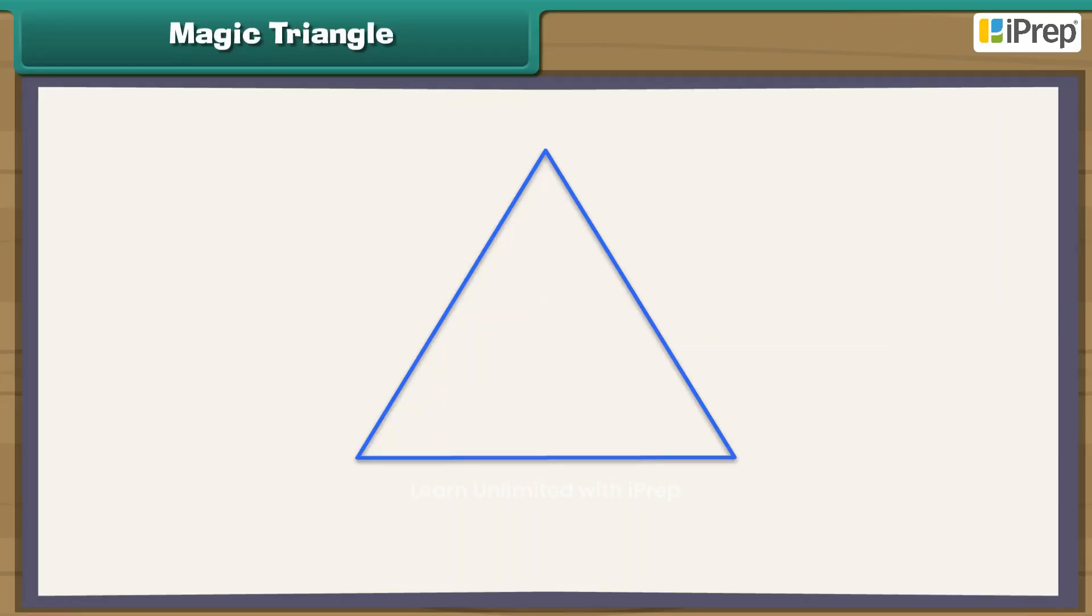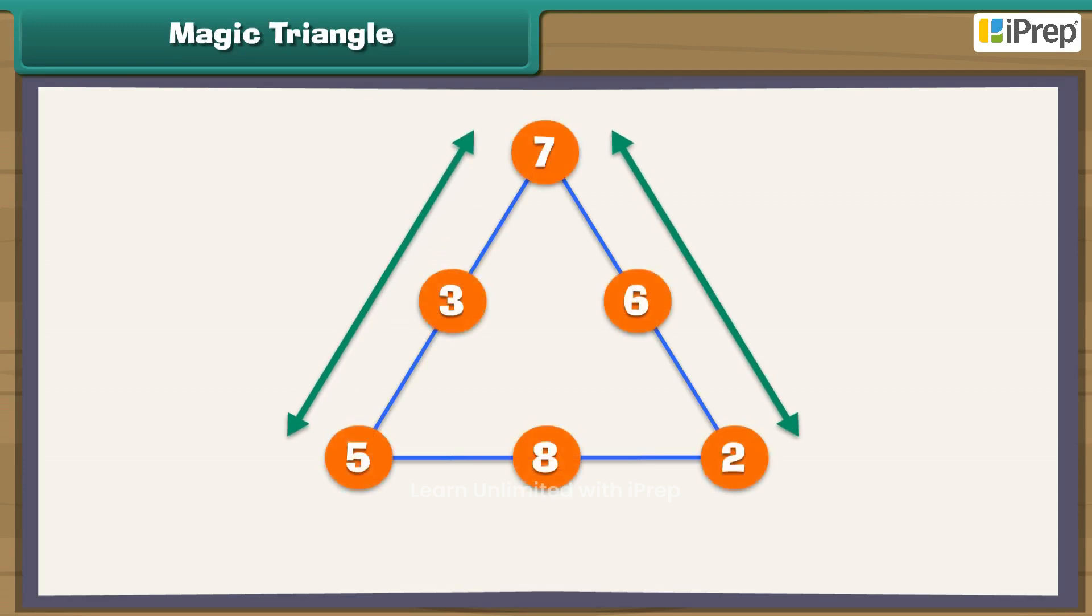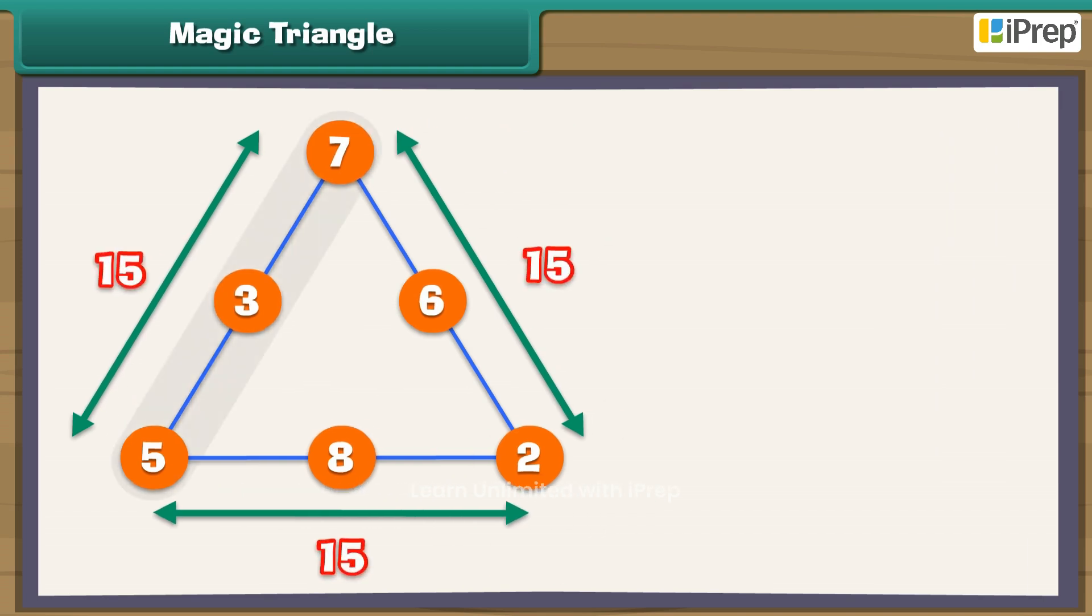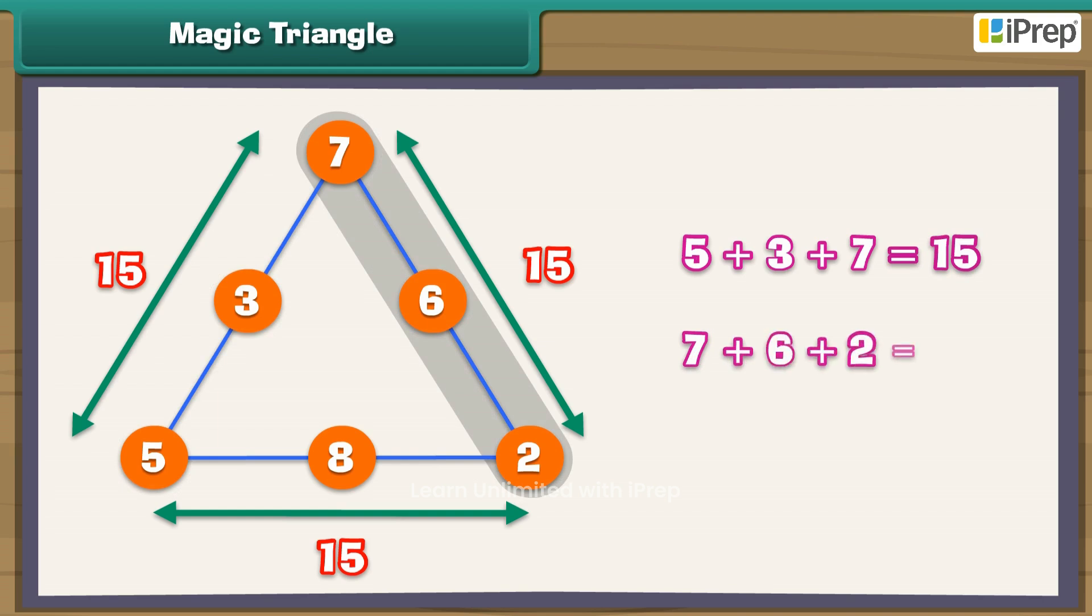Magic triangle. Look at this magic triangle. The sum of each side of the triangle is 15. Let us verify that. 5 plus 3 plus 7 equals 15. 7 plus 6 plus 2 equals 15.